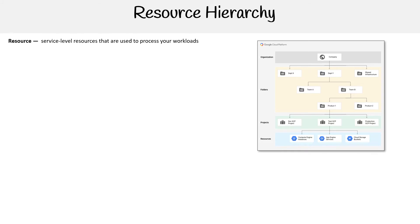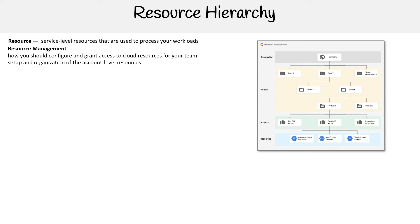First, a resource is a service-level resource used to process your workloads — could be BigQuery, Compute Engine, whatever service you want to launch. Then you have resource management: how you should configure and grant access to cloud resources from your team, set up and organize your account-level resources.